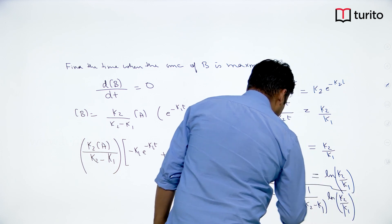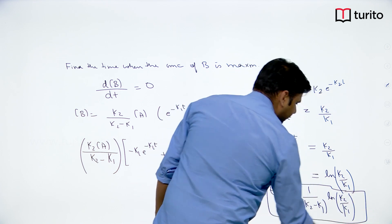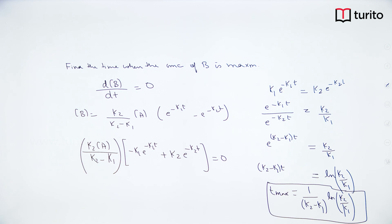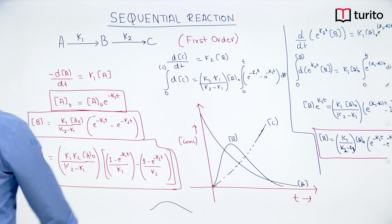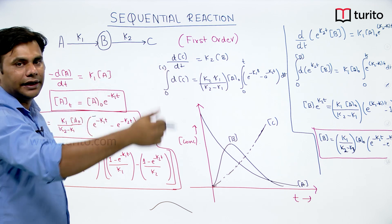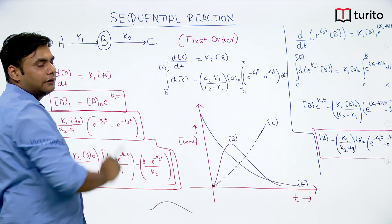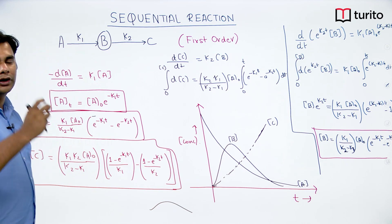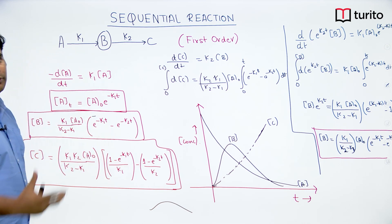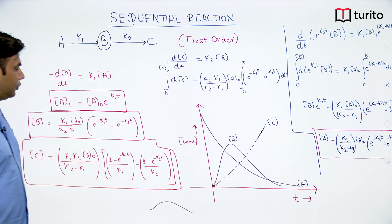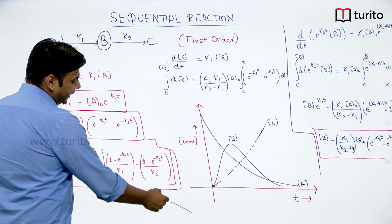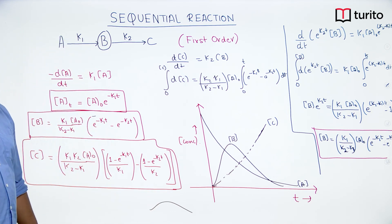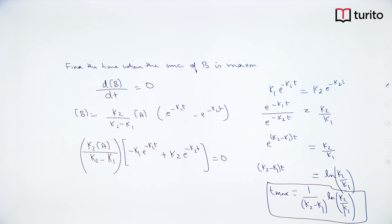This expression — t_max = ln(k2/k1)/(k2−k1) — cannot appear in JEE but is important for advanced and Olympiad level. When k1 >> k2, B accumulates and gives a distinct concentration peak. When k2 >> k1, the peak is very broad and small because B reacts almost as soon as it is formed. These are the key qualitative and quantitative conclusions about sequential reaction kinetics.